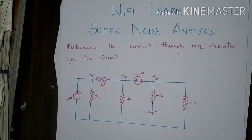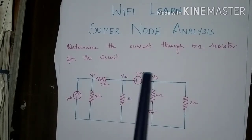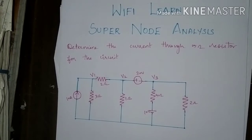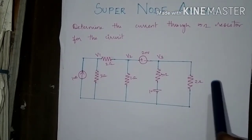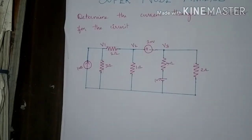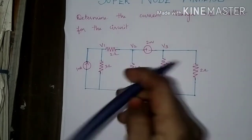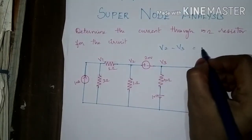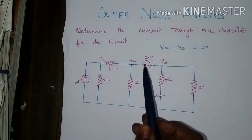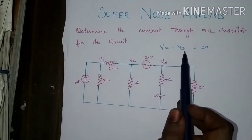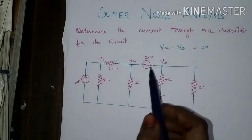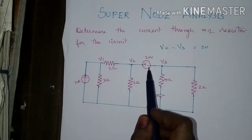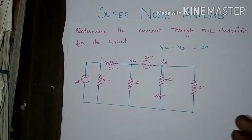We can solve this super node problem very easily by writing another node equation between these two nodes. We have an ideal voltage source of 20V between node 2 and node 3, so the equation is V2 minus V3 equal to 20. If the voltage source is reversed — negative terminal here and positive terminal here — then V2 minus V3 equals minus 20.